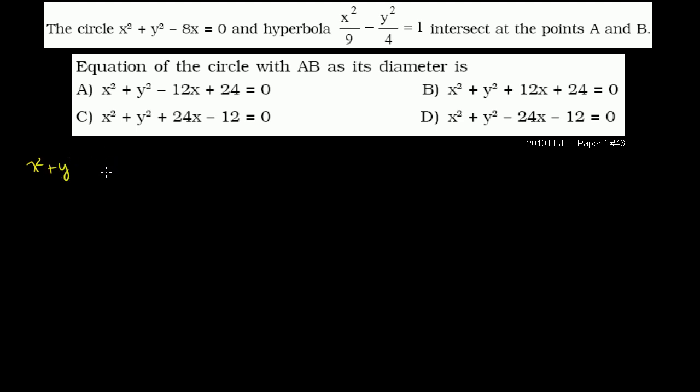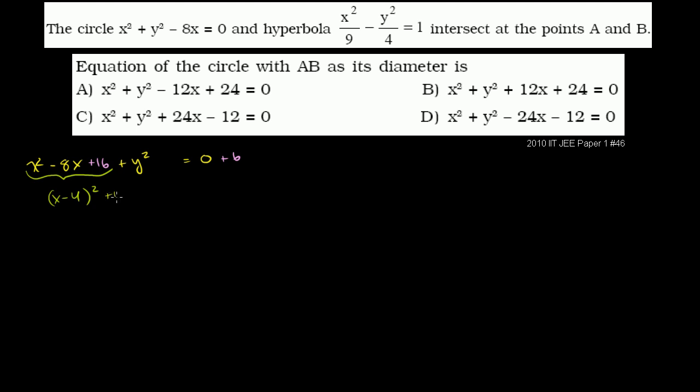Let's visualize the circle and the hyperbola. The equation of the circle x squared plus y squared minus 8x can be rewritten as x squared minus 8x plus y squared equals 0. Adding 16 to both sides to complete the square for the x term gives x minus 4 squared plus y squared equals 16.